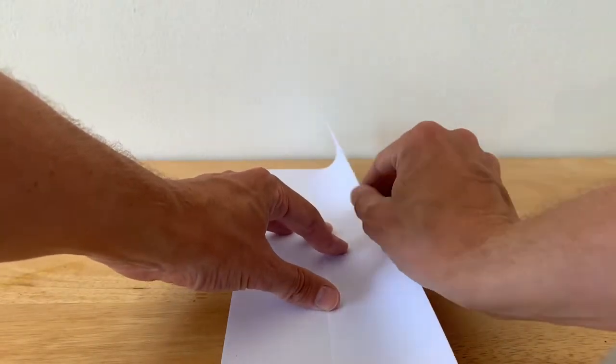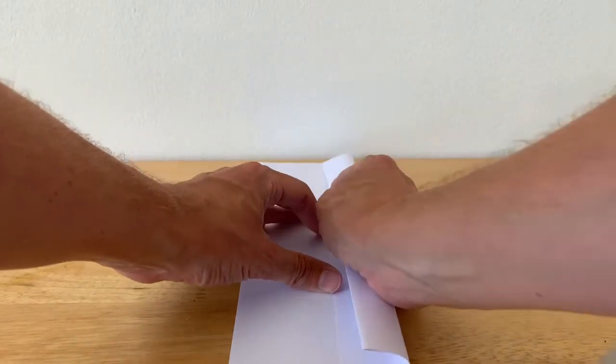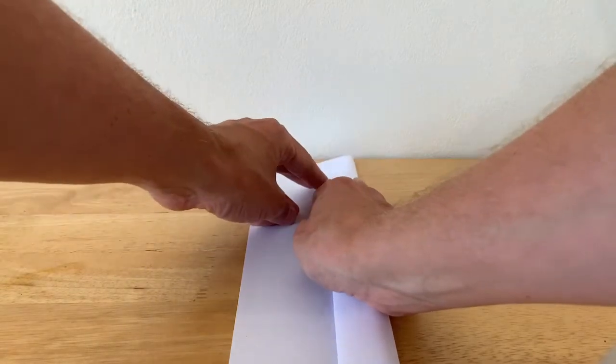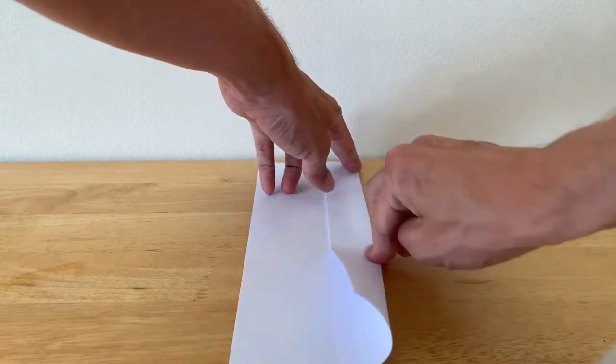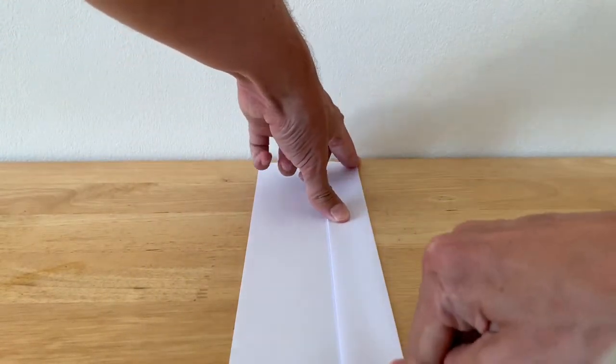Then the next fold we make is we fold this bit down to this bit of paper here, and again a nice clean fold along there. And then we do that one more time.